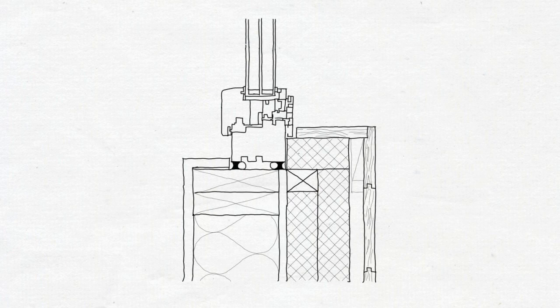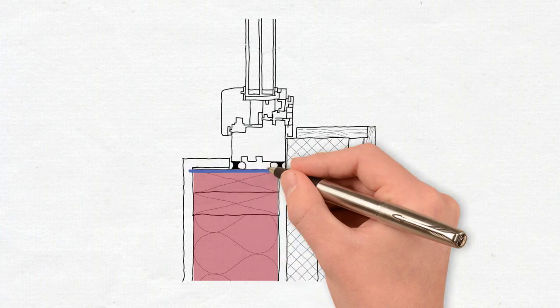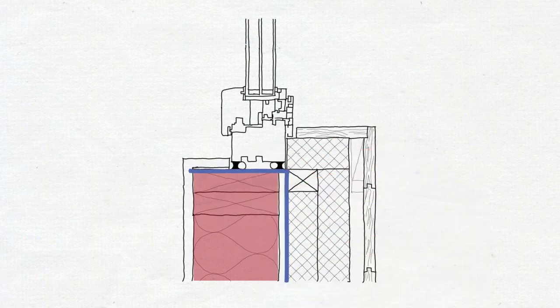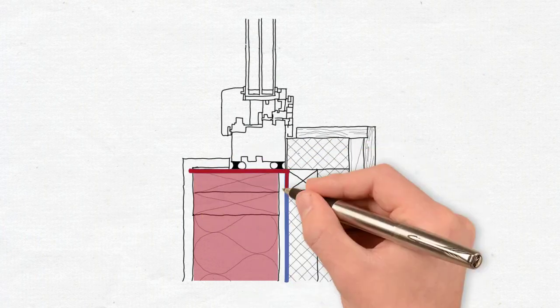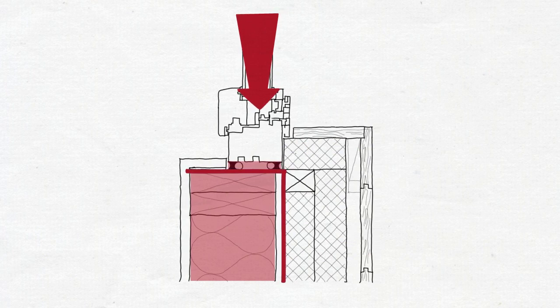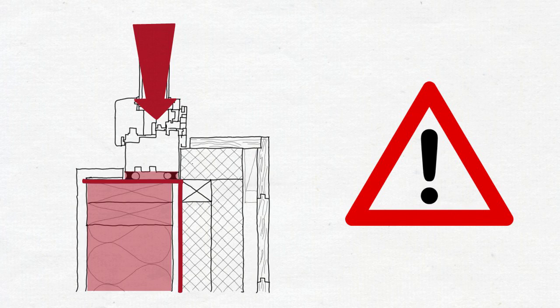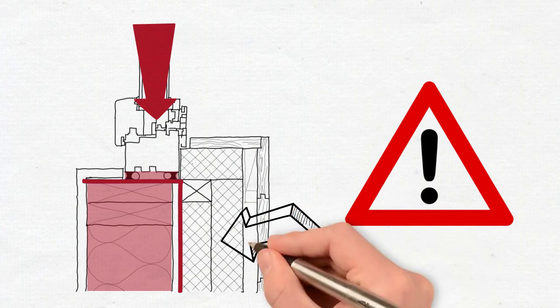For sequencing the air barrier formation, we start off with the framework of the wall. Then we install the WRB, which is doing double duty as an air barrier. Next step is installing the window and air sealing the window. This is the point where we already have a comprehensive air barrier and we can test the building. After that we install the exterior insulation.